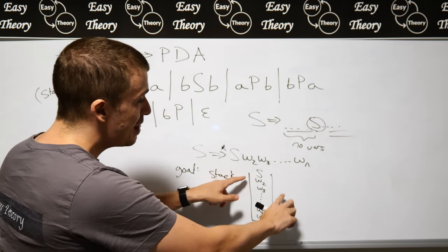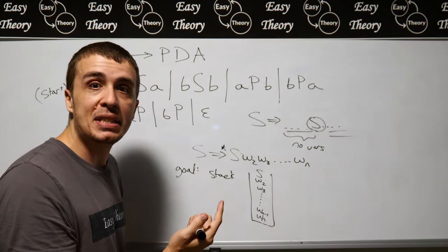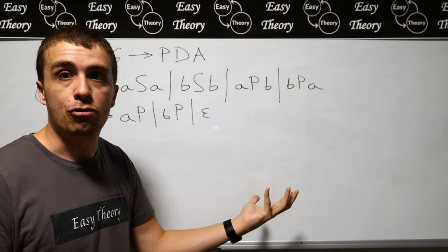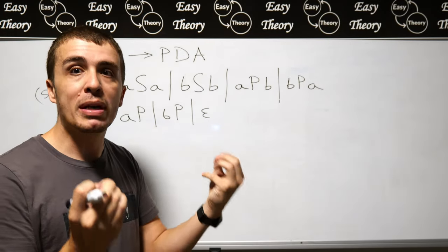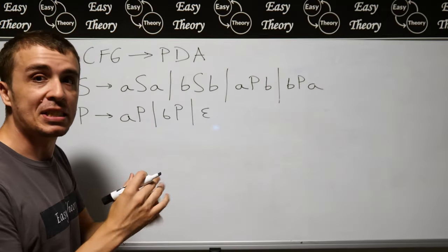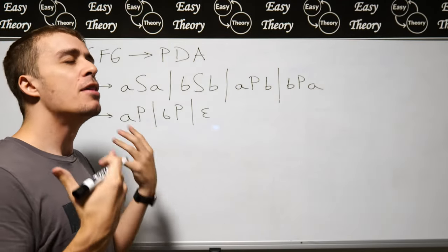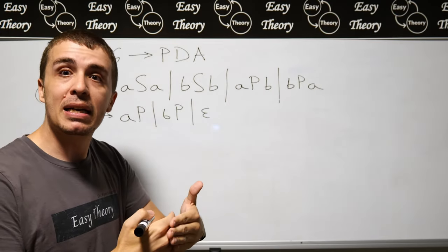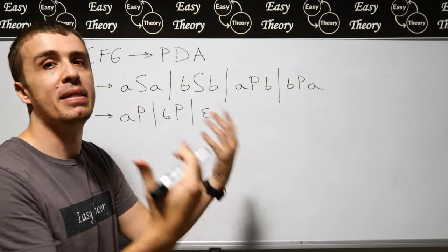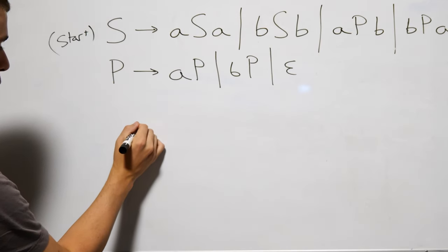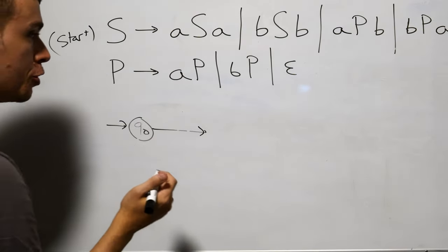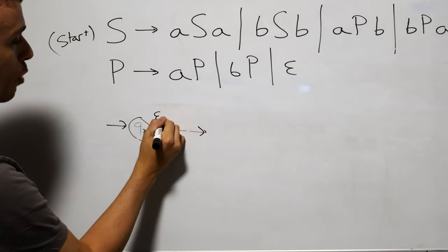The goal in the PDA is: if we see a variable at the top of the stack, apply a rule to it. Every single derivation in any context-free grammar always starts with the start variable. But the PDA stack doesn't have anything on it to start with — some textbooks have a preliminary character at the top, but let's assume there are no characters at the top of the stack to begin with.